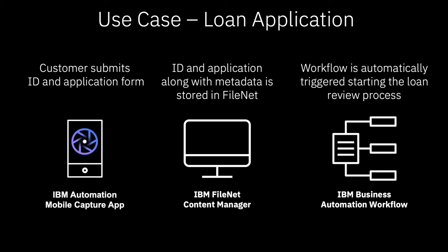The customer will open a bank loan application by submitting a copy of their identification and a bank lending form. That form will have the data extracted on the mobile device, which the customer will validate. Once submitted, the identification, bank loan form, and data will be pushed to IBM Fionnet for the business to store. From there, Fionnet will automatically trigger a workflow to start the loan origination process.